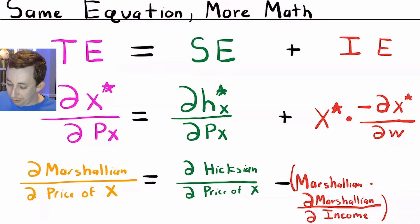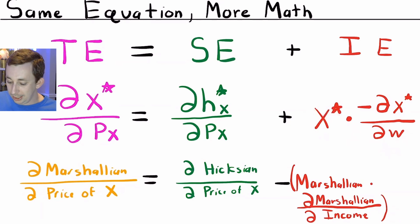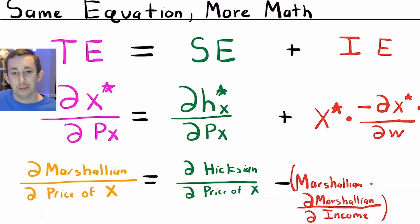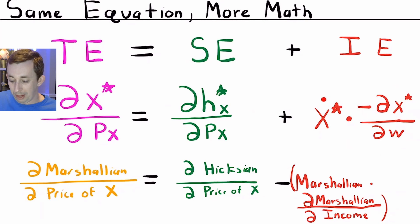The income effect seems a little strange — why do we have Marshallian demand in it? This derivative of Marshallian demand with respect to income is like how much less you buy per dollar that you lost. Well, that depends on how much of x you're buying. If you think about it in terms of a per-unit loss, you need to multiply by the number of units to figure out what your total loss is. So you multiply by Marshallian demand to get your total loss.